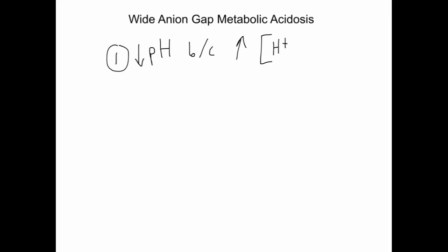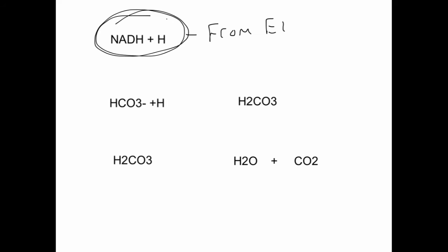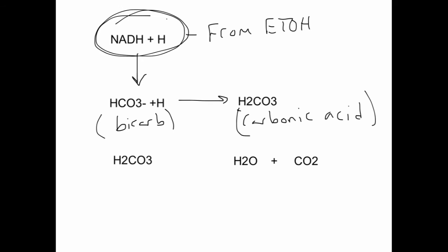Four mechanisms associated with alcohol ingestion lead to a wide anion gap metabolic acidosis: one, decreased pH due to increased hydrogen ion concentration; two, a decrease in bicarbonate; three, an increase in ketones; and four, lactic acidosis. The excess hydrogen ions from alcohol metabolism are taken up by bicarbonate, converted into carbonic acid, then to water and CO2. Water is excreted by the kidneys and CO2 by the lungs. Because bicarbonate is busy managing hydrogen ions from alcohol, the balance is upset and the anion gap widens.